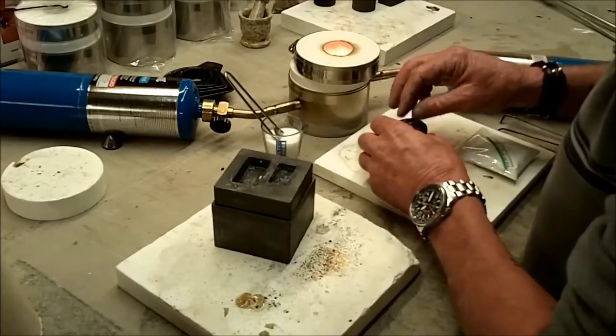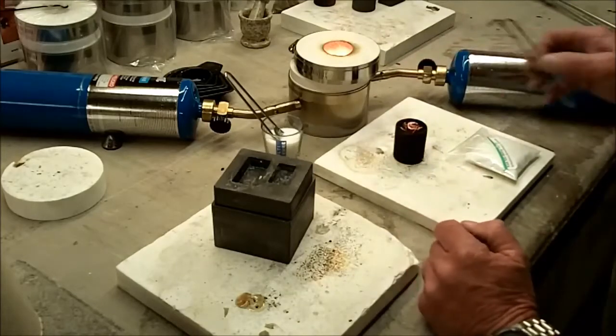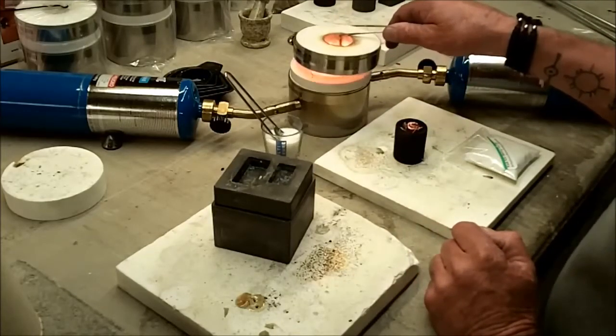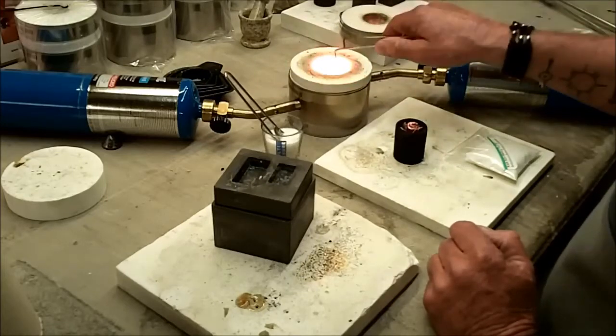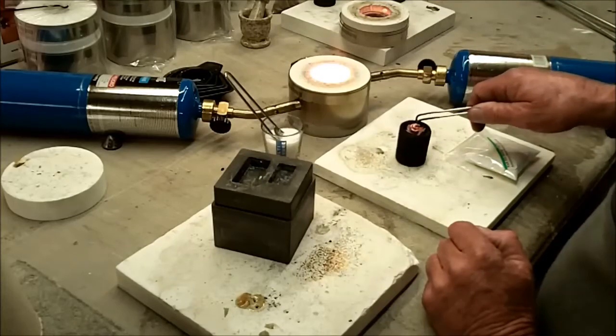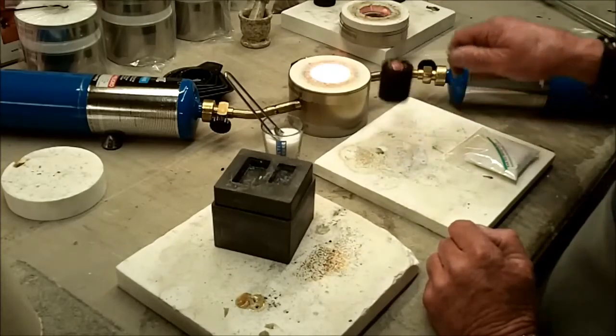And we're going to put it in the little kiln and we'll pour us a copper bar today. Take the lid off, take the spacer off, and we'll put our crucible in.